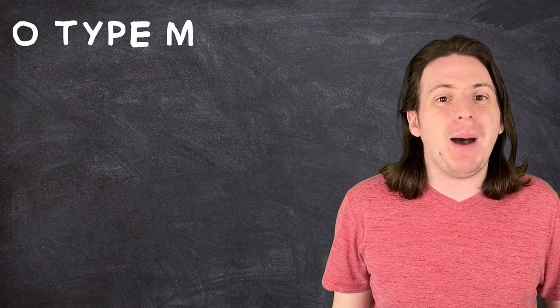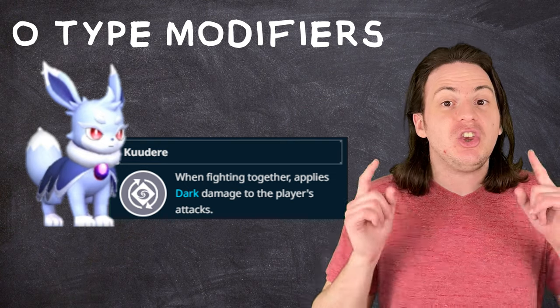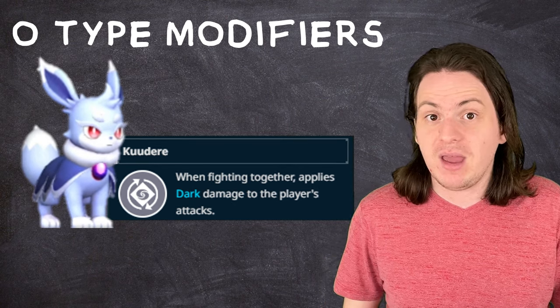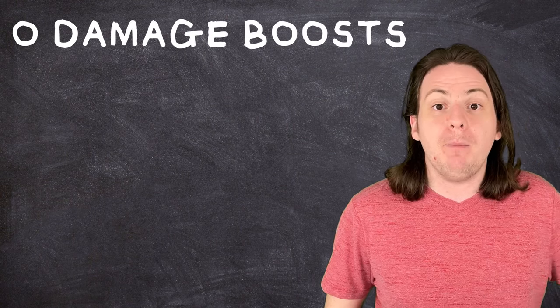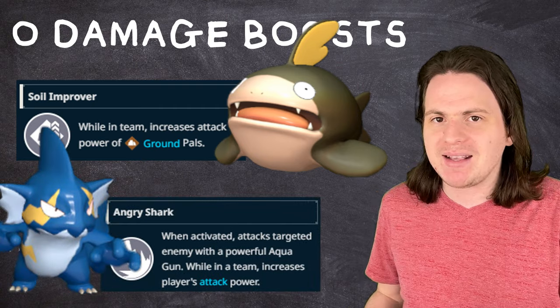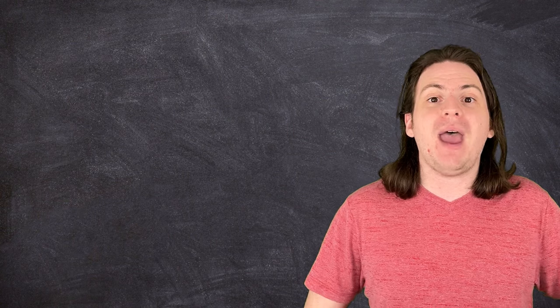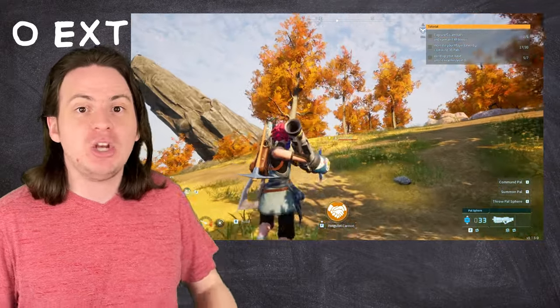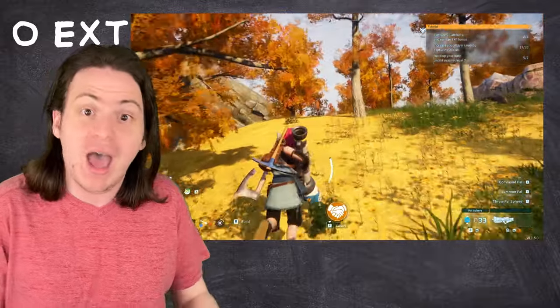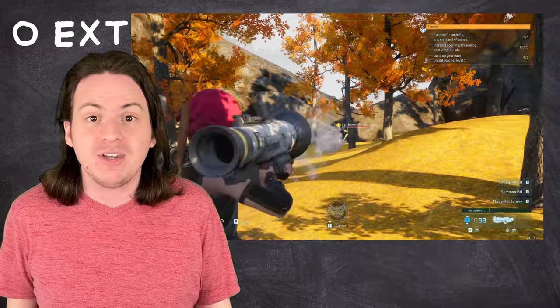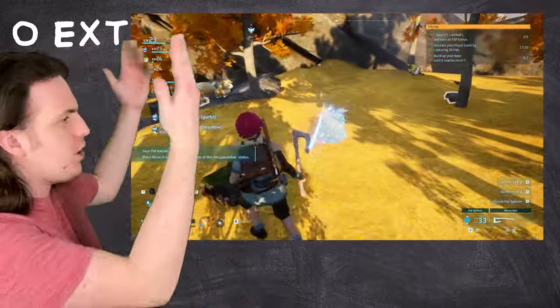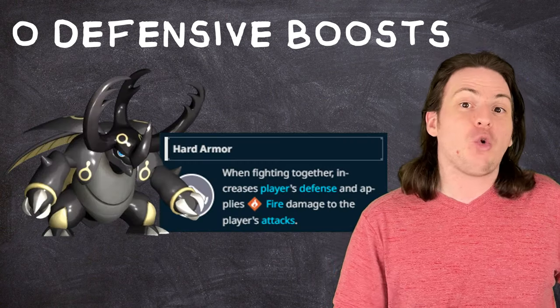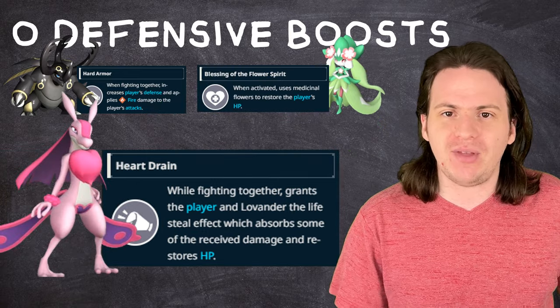The first feature is type modifiers. There are a lot of skills that change your character's attacks to be a certain type, which is good because it can allow you to hit things super effectively. After that is damage boosts. Some skills can boost the power of certain types, while others can enhance your attacks, things of that nature. Third, certain skills can give a PAL access to an extra type of attack, like how you can activate Pengullet's special ability to fire it out of a rocket launcher, to engulf your foes in fiery explosions. I know this may seem inhumane to use a penguin as live ammunition, but I mean, I gave it a check mark, but what else do you want from me? Now get in that rocket launcher! Next is defensive boosts. These are rarer, but there are some abilities that can increase your defense, heal you, give you a regen effect, stuff like that.